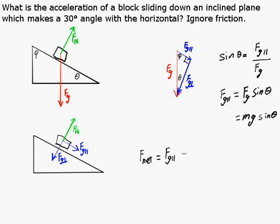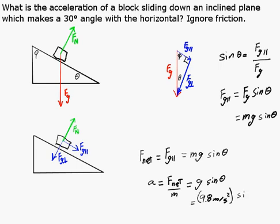Now, to find the acceleration, we simply take the net force and divide by the mass. So the acceleration will be g sine theta, or in the end, it's going to give an acceleration of 4.9 meters per second squared.